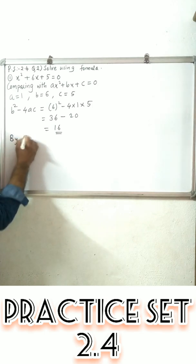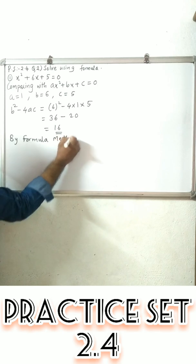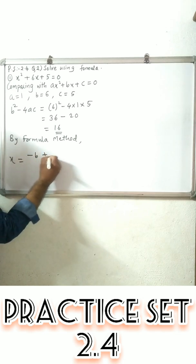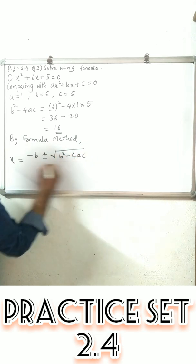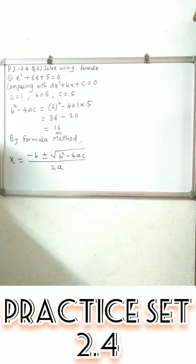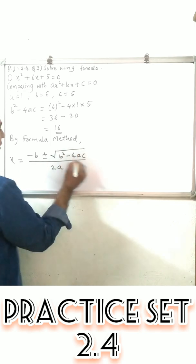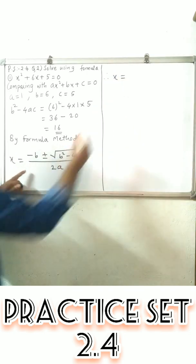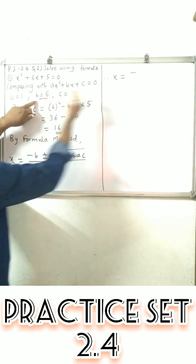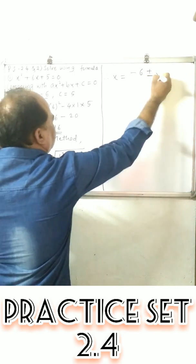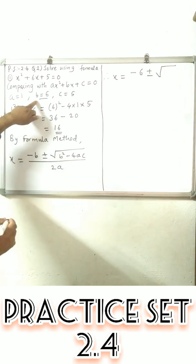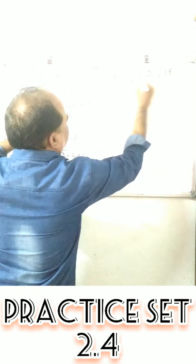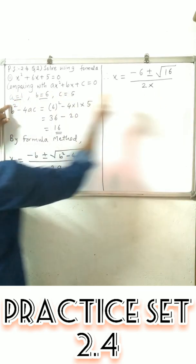The formula gives x equal to minus b plus or minus the square root of b² minus 4ac, upon 2a. Now we put in the values: b² minus 4ac is equal to 6² minus 4 × 1 × 5, which equals 36 minus 20, giving a discriminant value of 16.